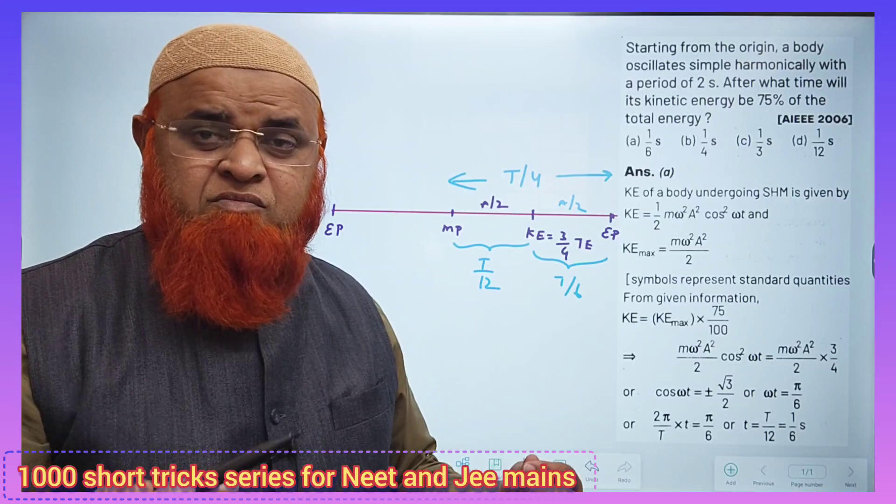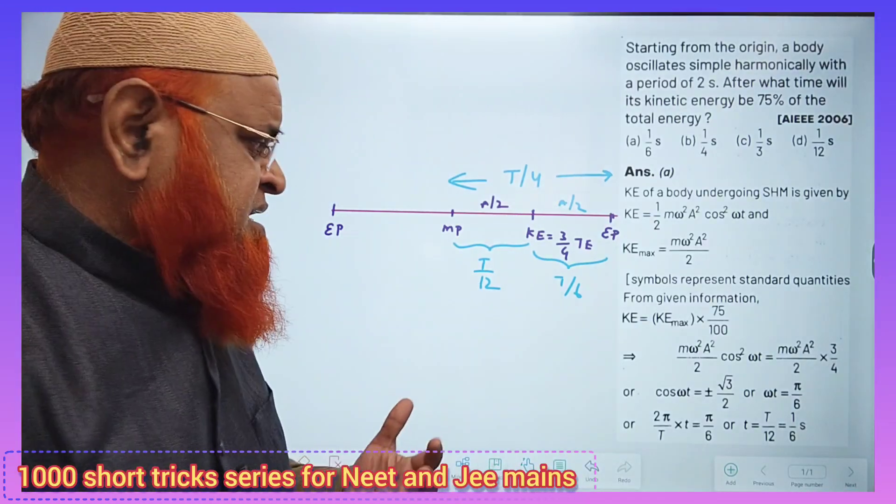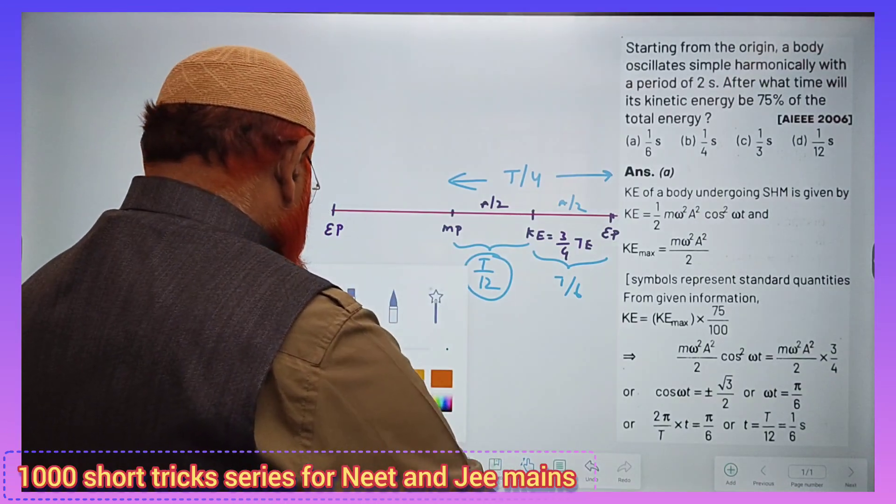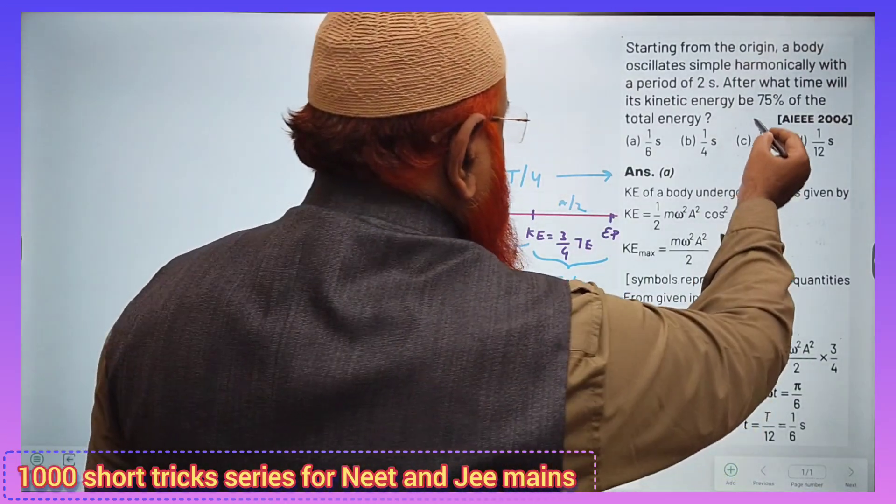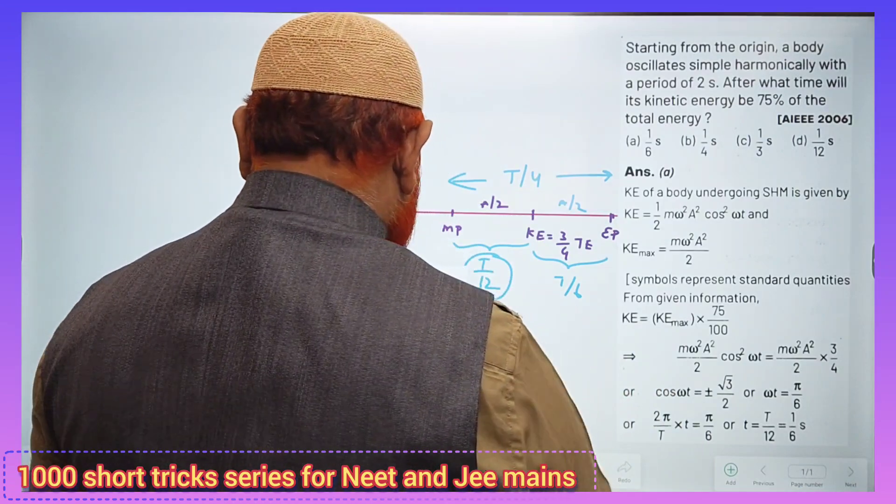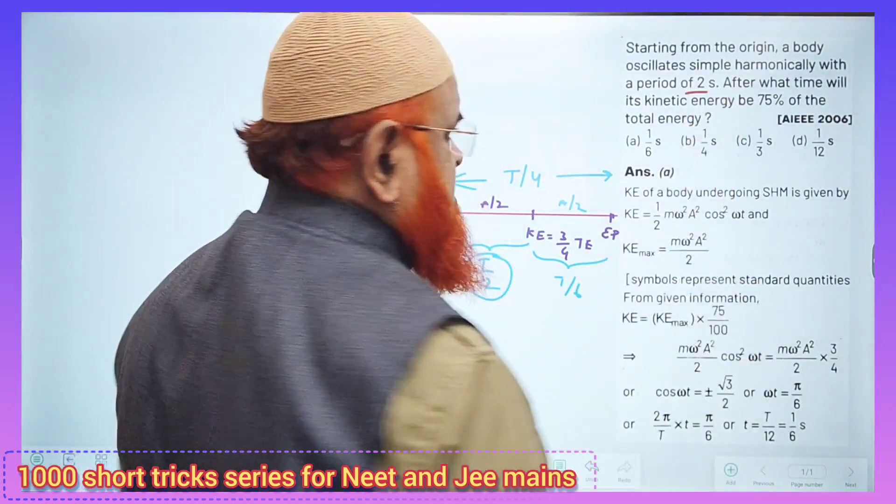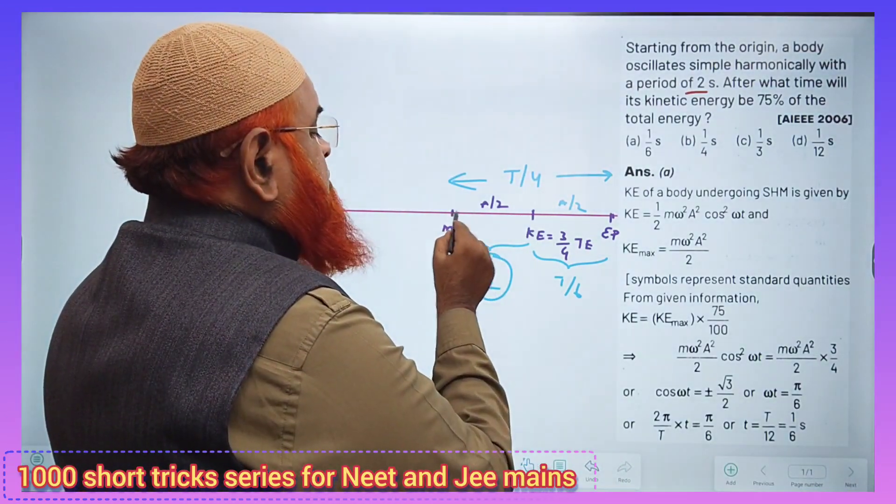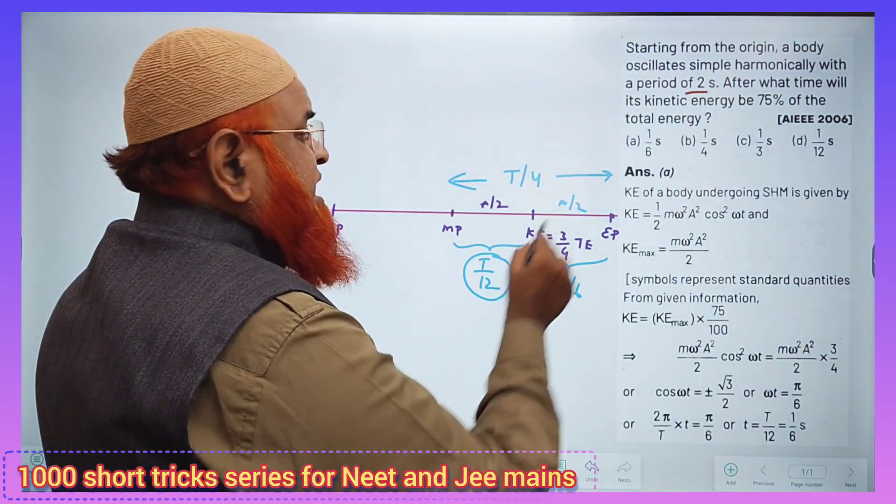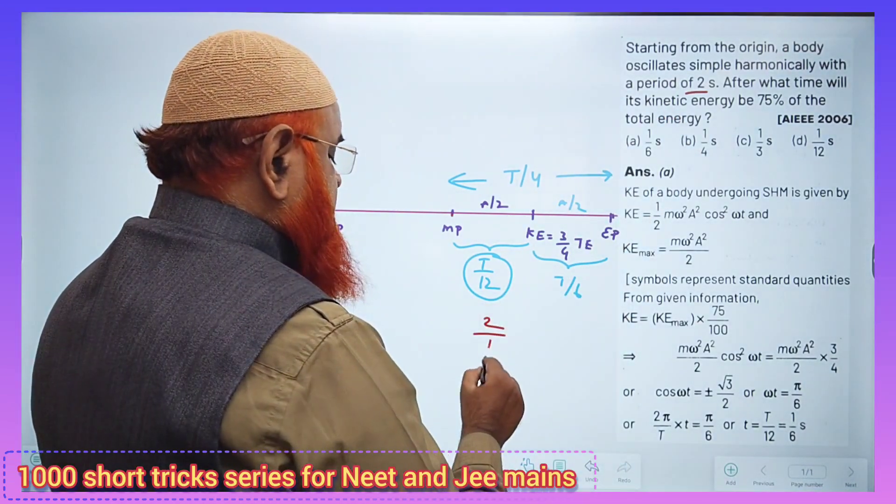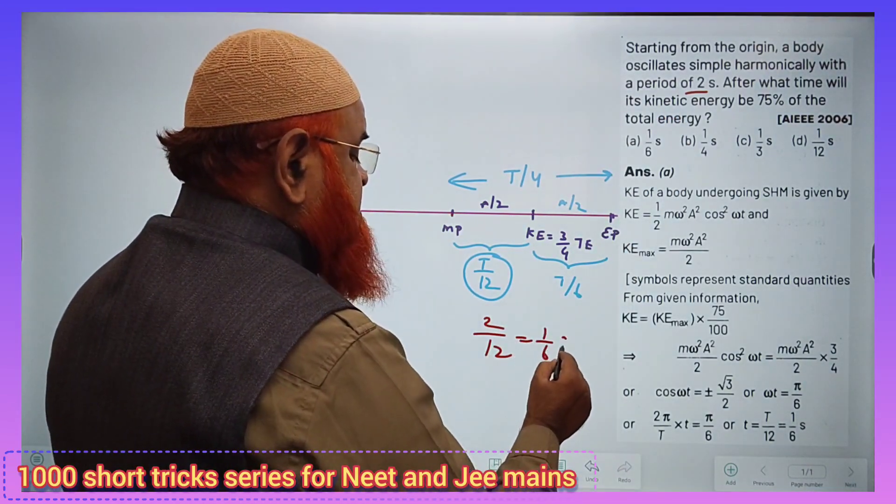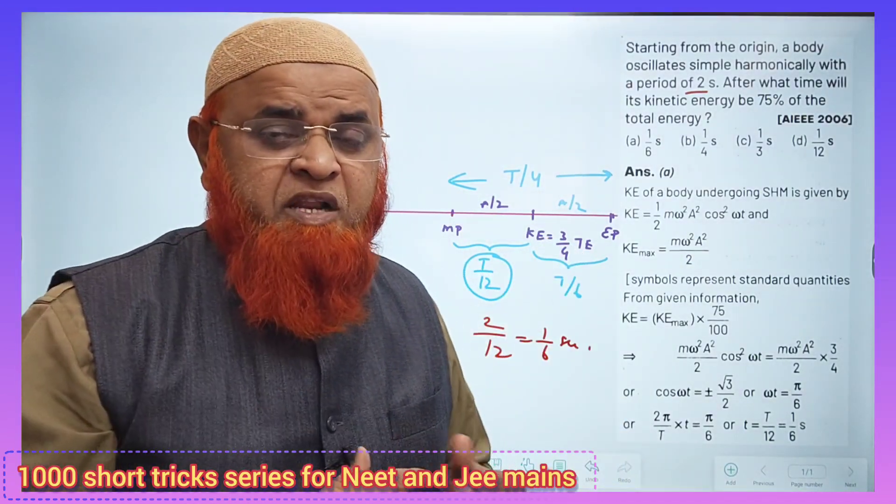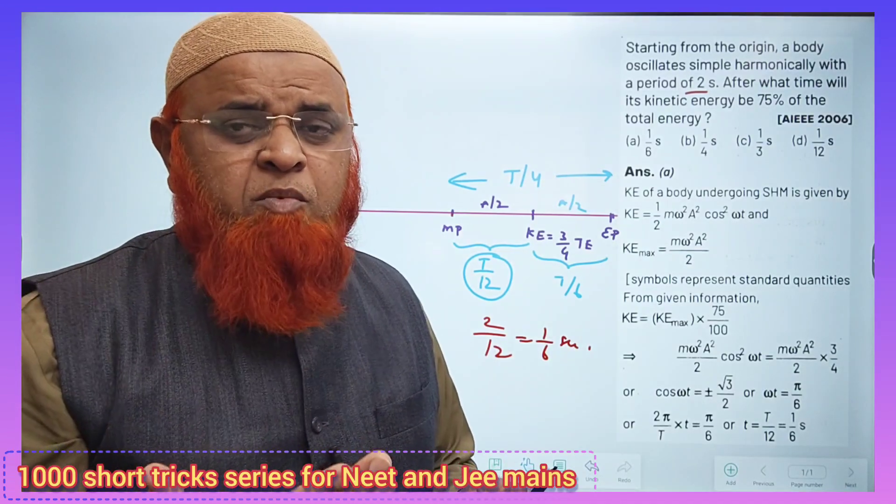Just simple logic. Once you know it is T/12, you can apply the logic and get the answer very easily. If the time period is two seconds, then the time taken from mean position to half of the amplitude is 2/12, which is 1/6 seconds.